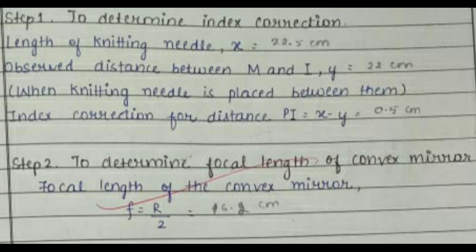This image shows the steps to follow for determination of the required focal length. First, we have to determine the index correction, and second, we have to determine the focal length of the convex mirror. Watch this image carefully as it is very important for this practical.